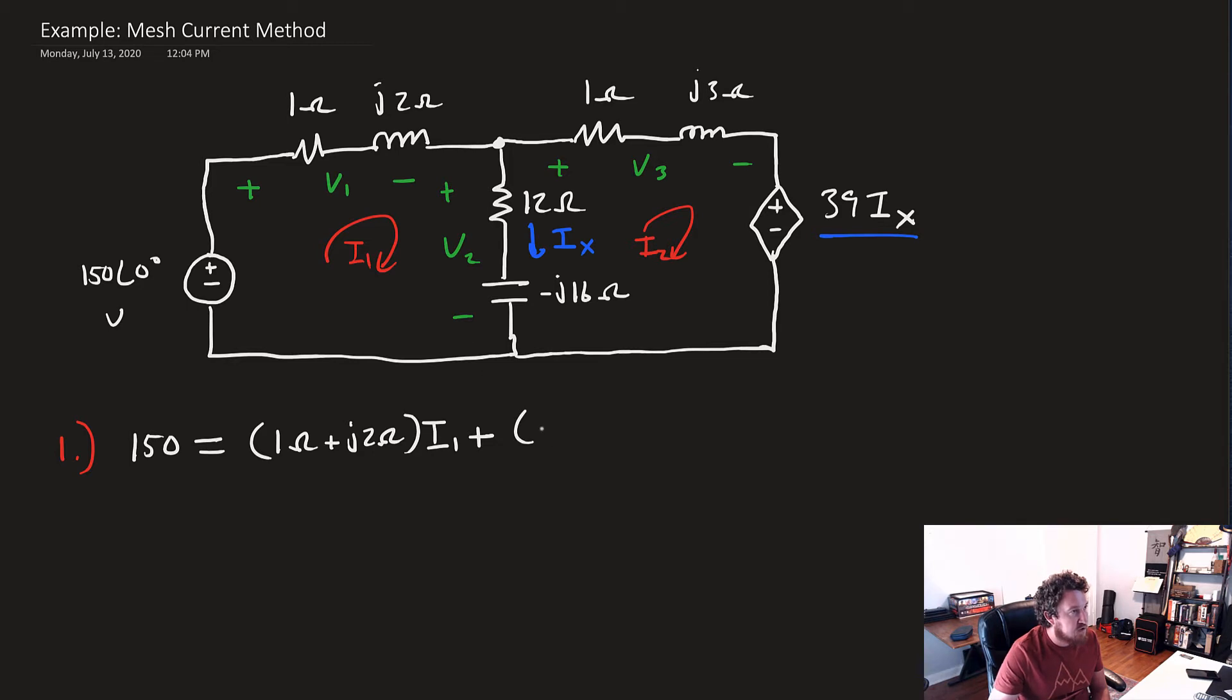now we're down here at V2, that's going to be 12-ohms minus j16-ohms. And that's, here's where I1 and I2 come against each other, so that's going to be times I1 minus I2. I think that's it for that one. That one's good to go.